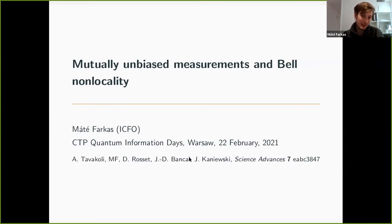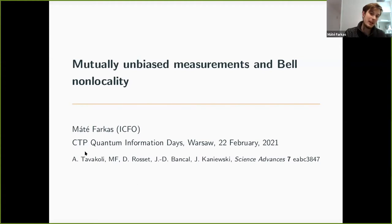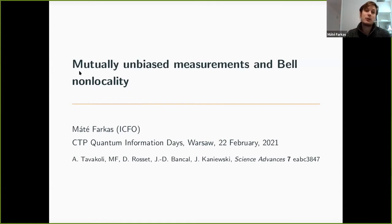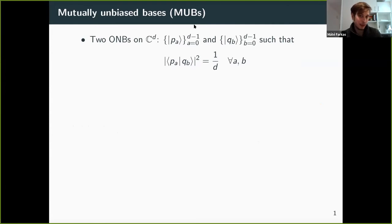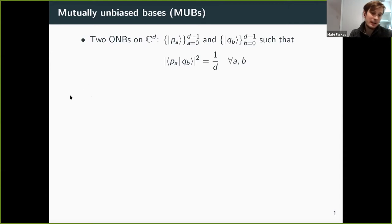My talk is based on this paper, but it's not the full content of the paper because we have many things covered. It's based on roughly half of this paper, and it's called 'Mutually Unbiased Measurements and Bell Non-Locality.' I'll first talk about Mutually Unbiased Bases — note that this is not exactly the same as Mutually Unbiased Measurements. MUBs are quite a well-established notion in quantum information.